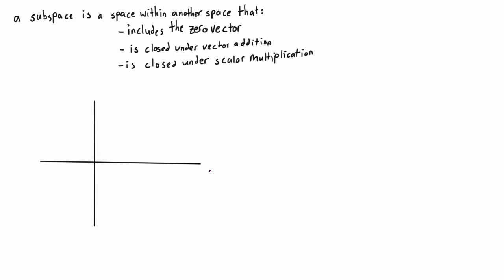Let's draw coordinate axes for R2 and draw two vectors. Say we have vector v and another vector that's not parallel — call it vector u. From previous videos, if we have a set of vectors u and v that are not parallel and are in R2, then the span of that set is going to be all of R2. If you take every possible linear combination of scaled versions of these vectors, you'll be able to create any other vector that exists in R2 through vector addition. So u and v span all of R2.